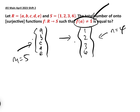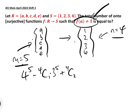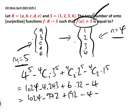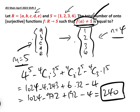Using the Stirling number with m=5 and n=4: 4^5 − 4C1·3^5 + 4C2·2^5 − 4C3·1^5 = 1024 − 4·243 + 6·32 − 4·1 = 1024 − 972 + 192 − 4 = 240. So there are 240 surjective functions from R to S ignoring the constraint F(A) ≠ 1.